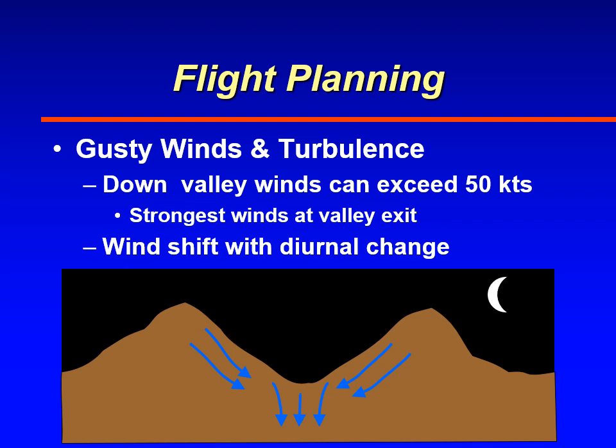Also, if cold air drainage is really strong, winds can exceed 50 knots. They can be very strong, especially where the valley opens up, because winds accelerate to that point. You'll also notice that winds change diurnally — from morning to afternoon to evening. So if an airport is sitting in a valley, be aware that you'll have wind direction changes throughout the day under clear sky conditions.